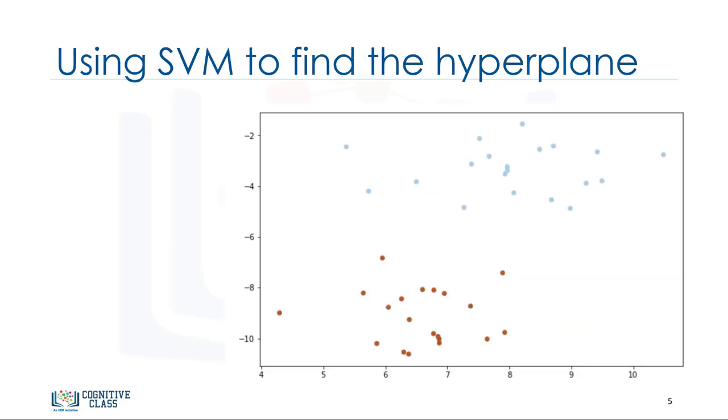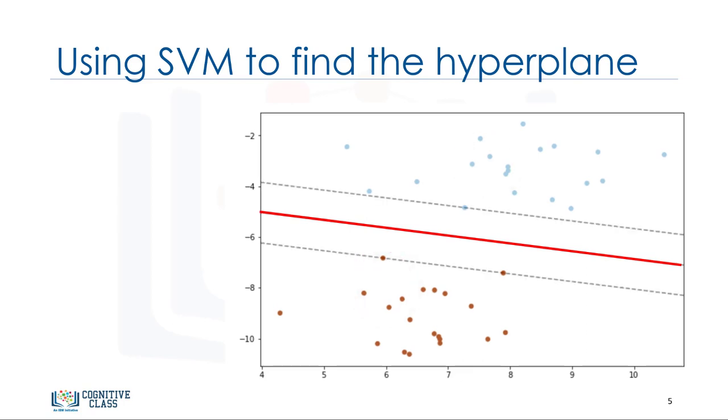Now we get to another question, specifically, how do we find the right or optimized separator after transformation? Basically, SVMs are based on the idea of finding a hyperplane that best divides a dataset into two classes, as shown here. As we're in a two-dimensional space, you can think of the hyperplane as a line that linearly separates the blue points from the red points. One reasonable choice as the best hyperplane is the one that represents the largest separation, or margin, between the two classes.